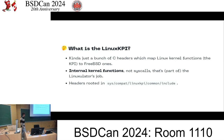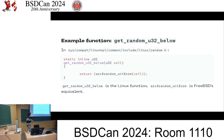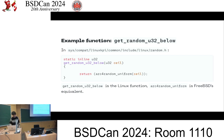So what is the Linux KPI? Basically, it's a bunch of headers which map Linux functions to FreeBSD kernel functions. These are internal kernel functions - it's not the same thing as the Linux emulator, which translates system calls from user space programs. It purely deals with internal kernel functions. One example of such a wrapper is get_random_u32, which on FreeBSD maps to arc4random_uniform. It's in linux/random.h and simply translates the Linux function to the equivalent FreeBSD function.